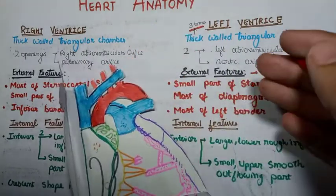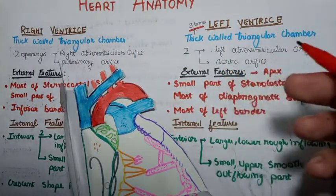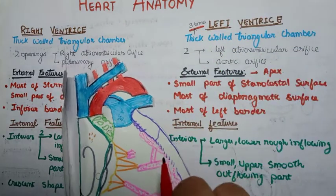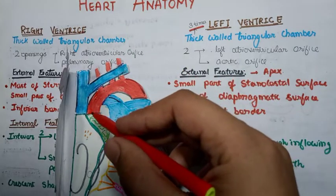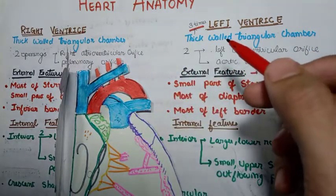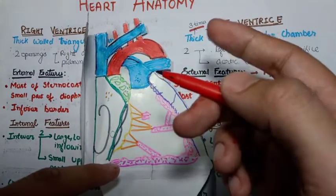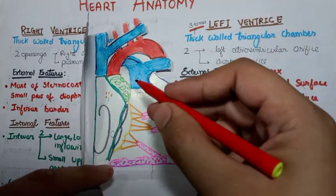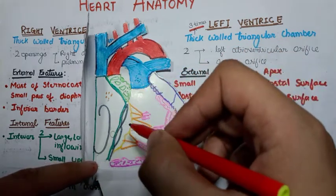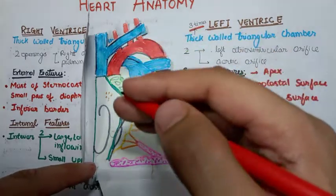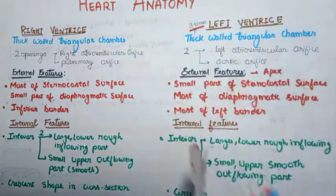The left ventricle similarly has two openings: the left atrioventricular orifice, which is analogous to that of the right ventricle, and the aortic opening, which opens into the left ventricle. The pulmonary and aortic openings are situated at a higher level — these are the outflowing portions — while the atrioventricular opening is situated in the lower region. We will study the internal features in more detail shortly.